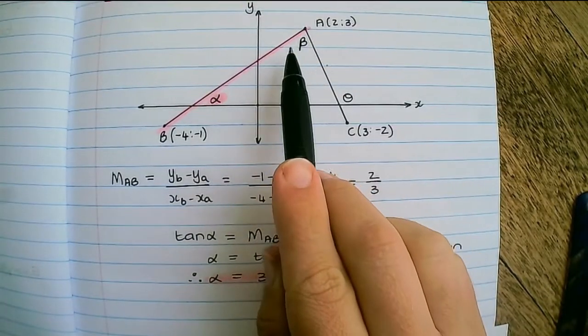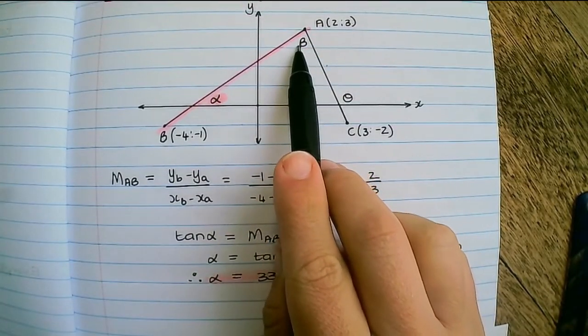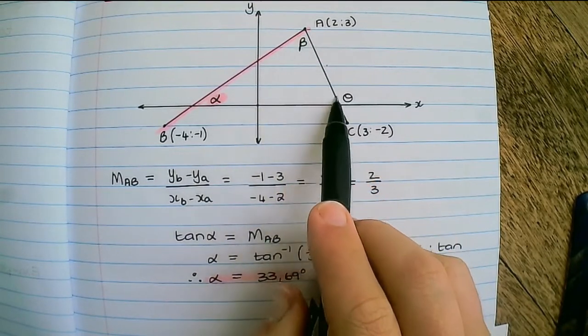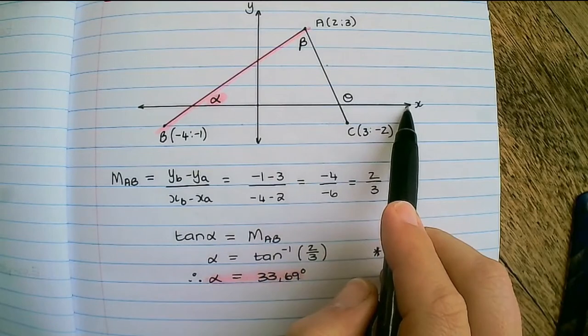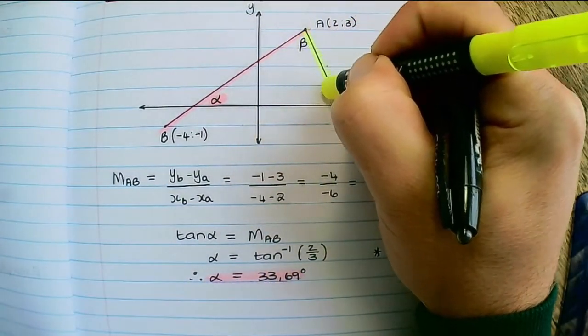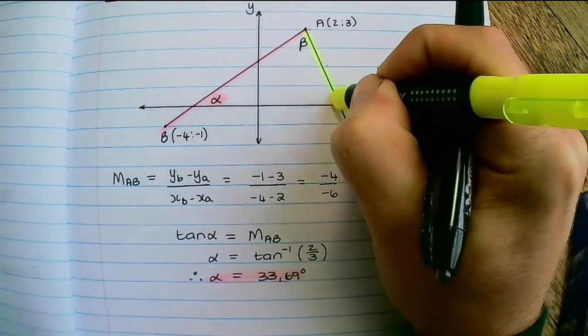Now we can't find beta because beta's angle is not formed with the x-axis. So the angle of inclination is between the gradient of the line and its x-axis.